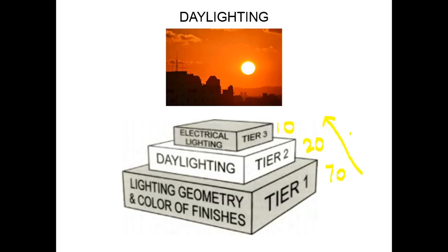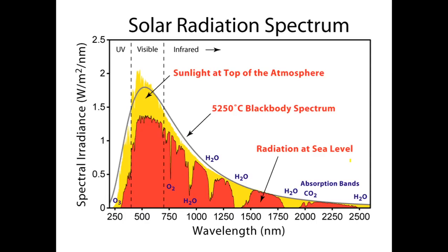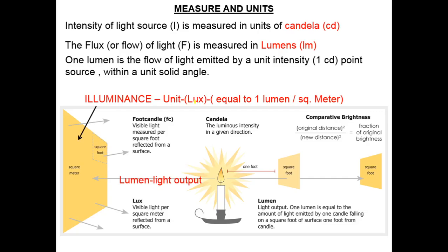Some fundamental technical definitions of light: the source of daylight is the sun. The brightest sunshine is about 100 kilolux, which is almost equal to one lakh lux. The thermal radiation emitted because of sunlight is almost one kilowatt per square meter. Light is the visible spectrum — we have the infrared and the ultraviolet rays on either side. It ranges from 4×10⁻⁷ to 7×10⁻⁷ meters. We have the solar radiation spectrum showing how much spectral irradiance is also emitted by the sun.